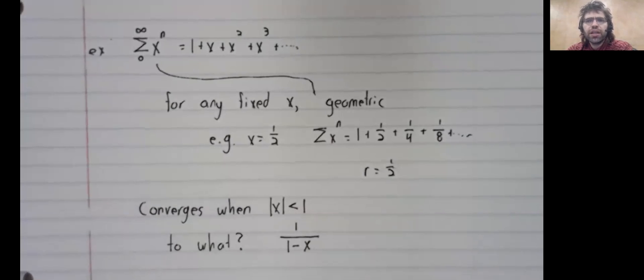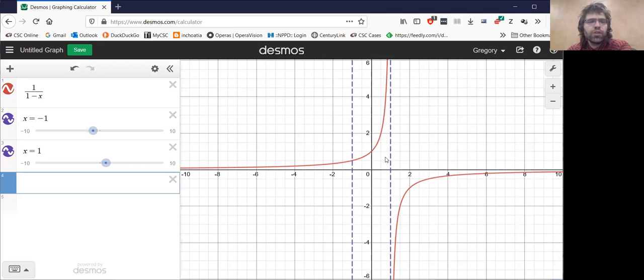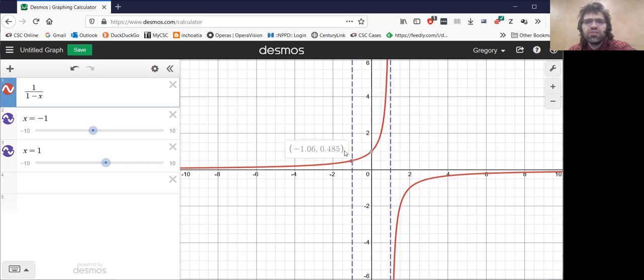Let's take a look at this graphically. Here's 1 over 1 minus x, this curve. And the absolute value of x is less than 1 in this interval between these dashed lines. And in this interval, the series x to the power of n, the power series, is supposed to converge to this curve.